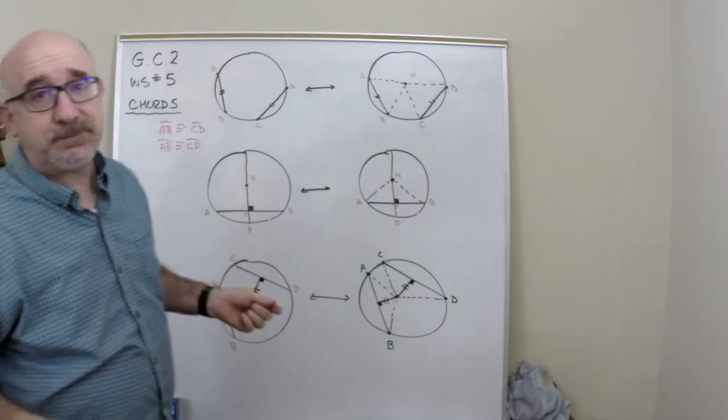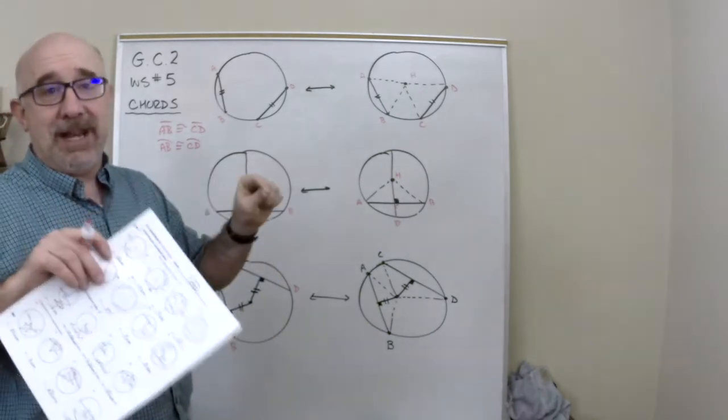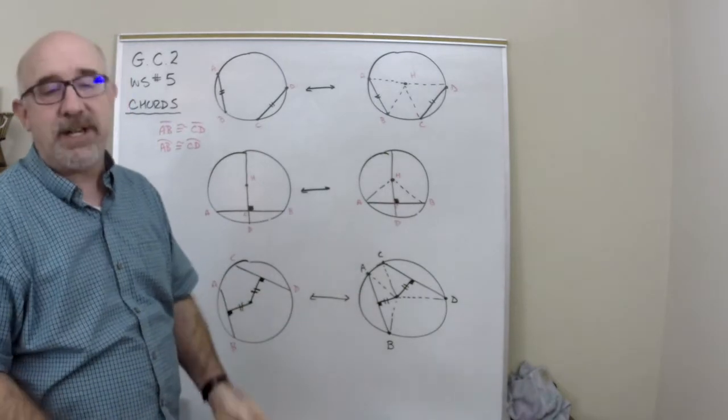It makes sense, doesn't it? If they have the same length, they're taking up the same arc sitting underneath them.